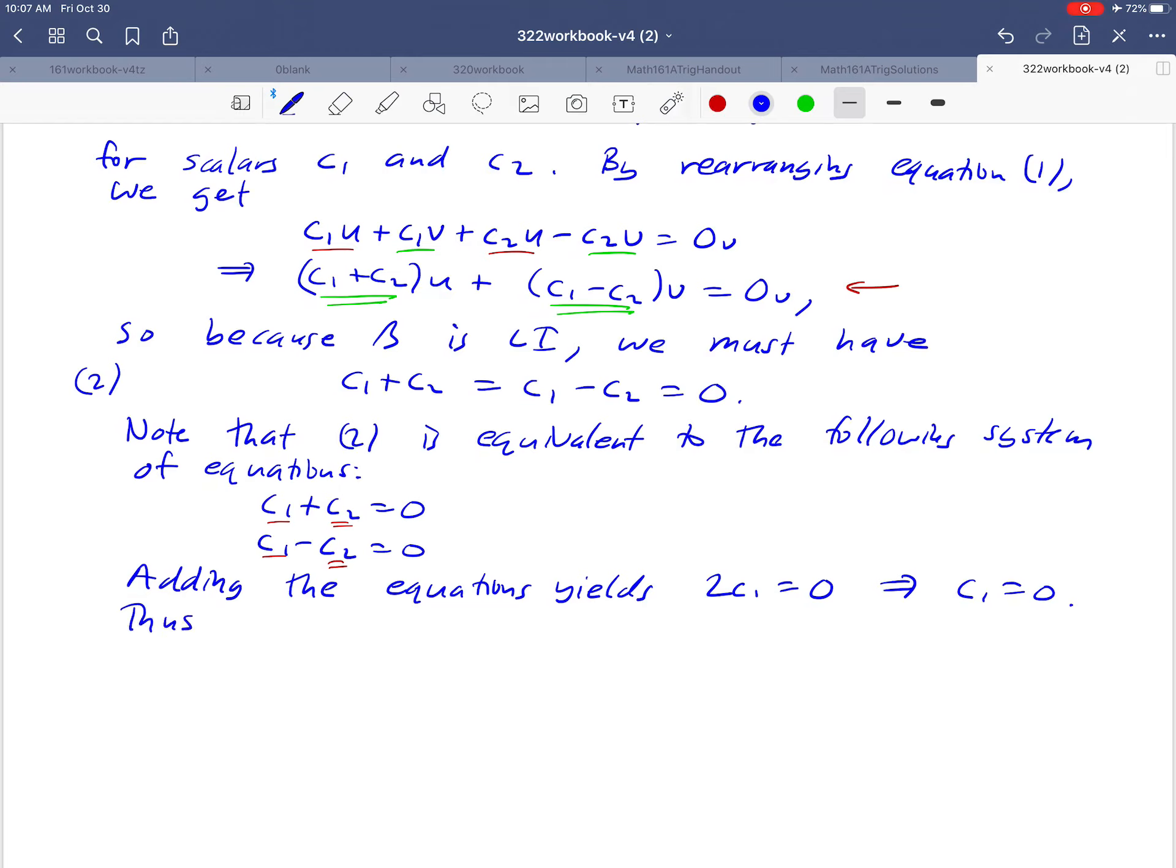That means if we look at the first equation, if we know that c₁ is zero, c₂ is going to have to be zero as well, because c₂ = -c₁ and we know that c₁ is zero, so we get zero for the second one.